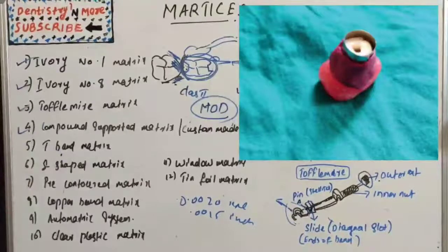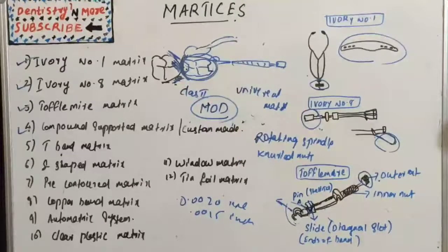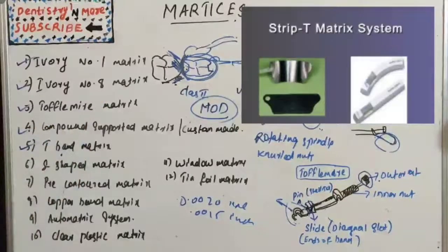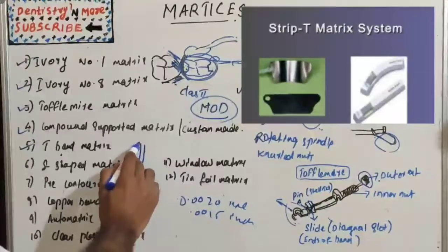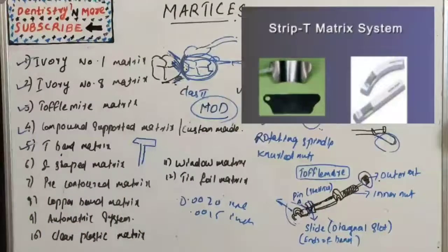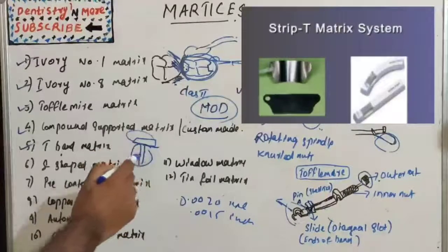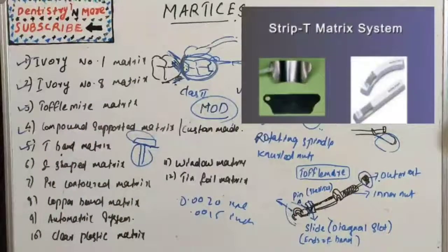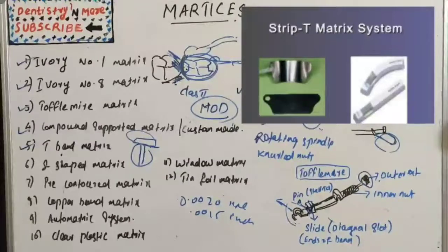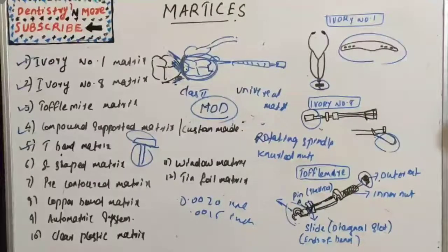T-band matrix is a preformed T-shaped stainless steel matrix without a retainer. The long arm of the T surrounds the tooth and overlaps the short arm. The band is adjusted according to the circumference of the tooth, stabilized by wedging, and supported by low-fusing compound. It is commonly indicated for class 2 cavities involving one or both proximal surfaces; it is simple, inexpensive, rapid, and easy to apply.